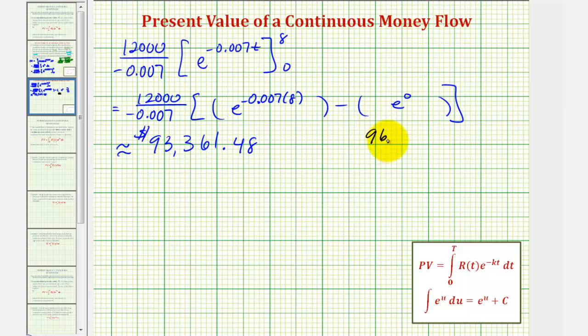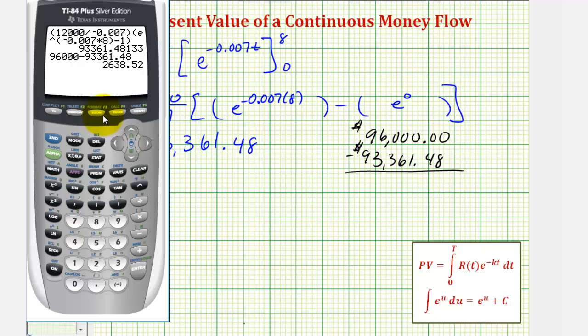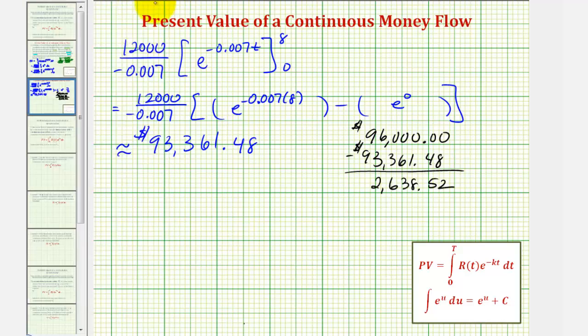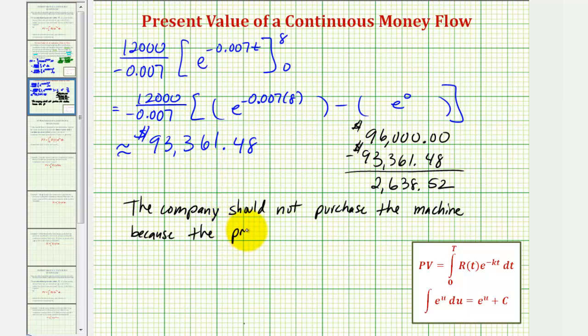If we take $96,000 and we subtract $93,361.48, let's go ahead and find this difference. Notice the difference is $2,638.52. So we'll say the company should not purchase the machine, because the present value is $2,638.52 less than the cost of the machine.